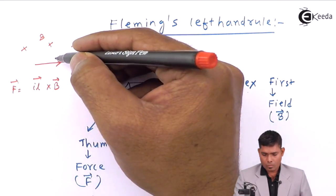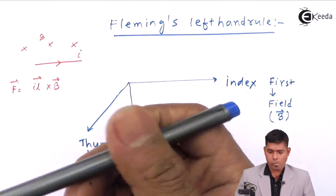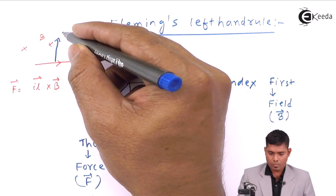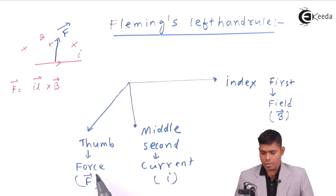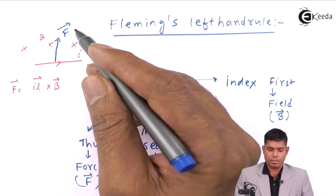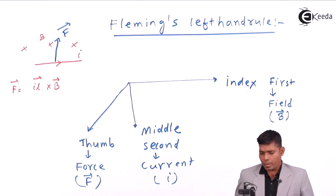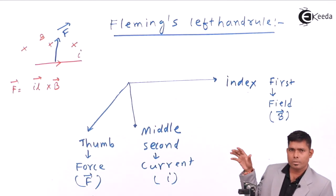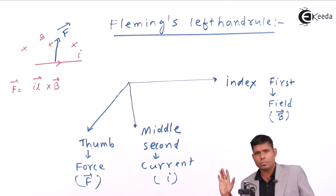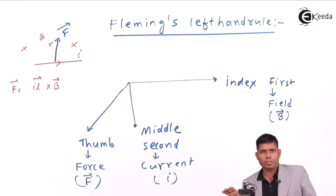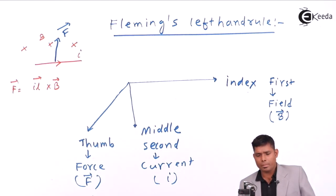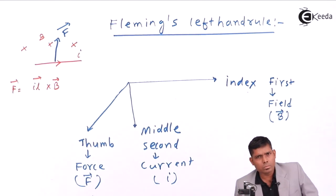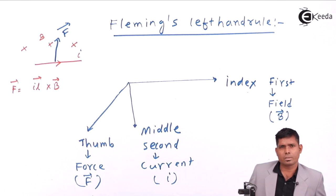So the direction of force on the conductor — it will move this way. This direction is where the force acts, or the motion of the conductor. Now, rather than using the right hand screw rule or right hand palm rule, let us use Fleming's left hand rule to see what direction the force is in.